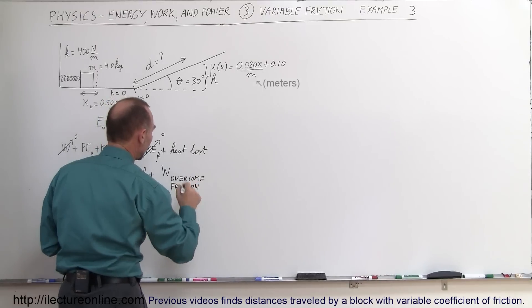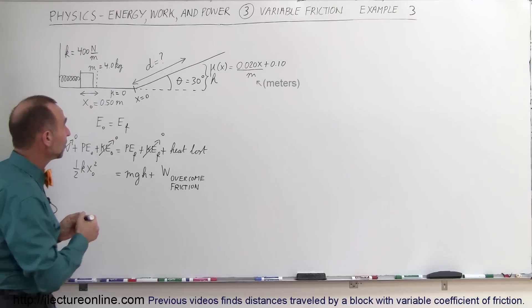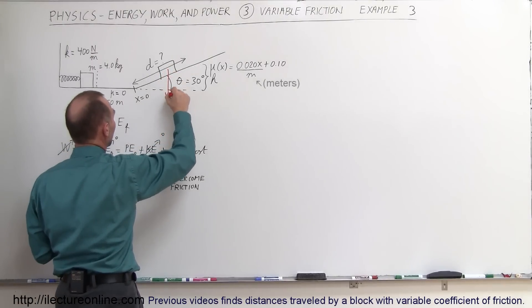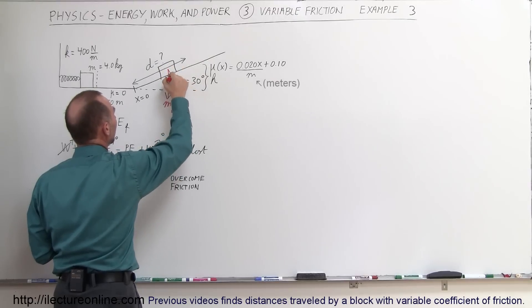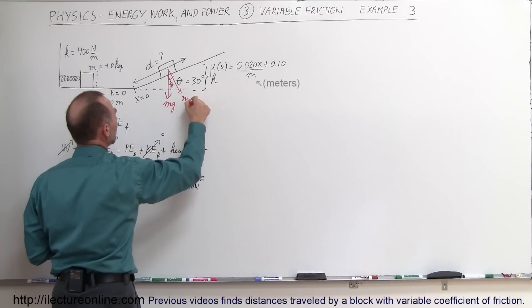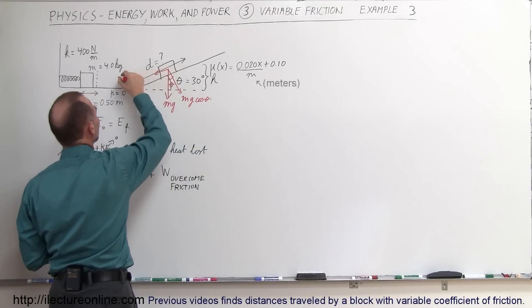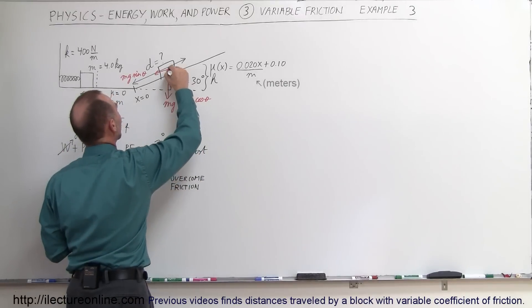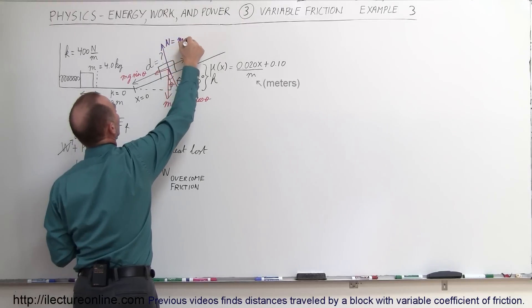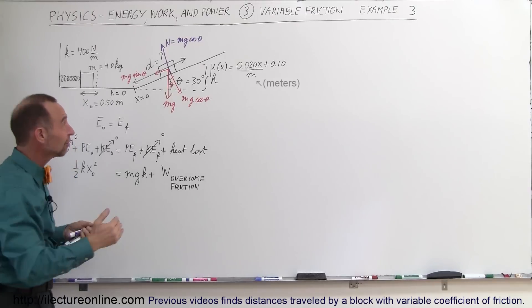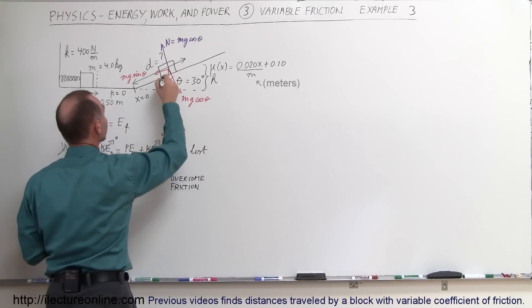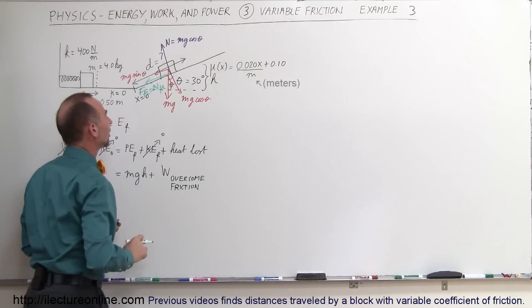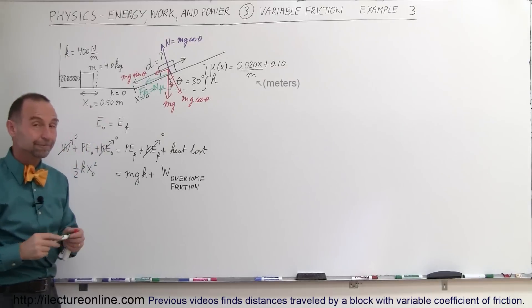Let's figure out the work done to overcome friction separately. When the block is on the incline, we draw the forces: the weight due to gravity MG, the perpendicular component to the incline MG cosine theta, the component along the incline MG sine theta, and the normal force pushing back against the block equal to MG cosine theta. This gives a friction force acting downward along the incline equal to the normal force times mu, which is MG cosine theta times mu.